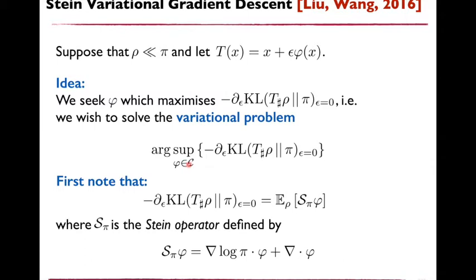The key observation of the authors is that this objective function can actually be expressed in closed form up to expectations in terms of the operator S_pi, known as the Langevin-Stein operator. This is a first-order differential operator where pi enters through the gradient of the log of pi, with no dependence on the normalization constant of pi. As is known from Stein's method, if rho equals pi then this term is zero. Taking the supremum over a sufficiently rich class of vector fields phi gives what is called a Stein discrepancy, which is zero if and only if rho equals pi — offering a measurement of distance between the two distributions.